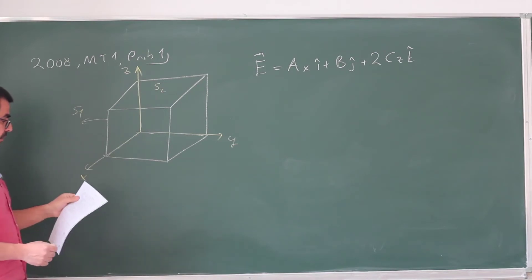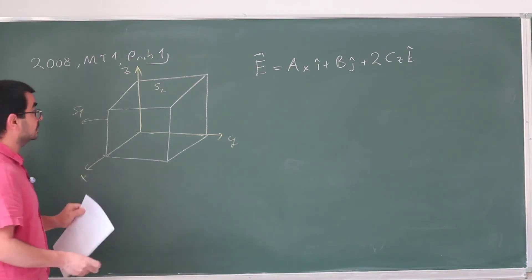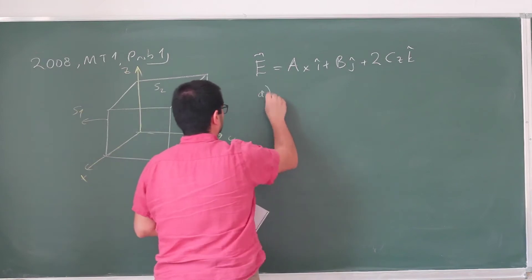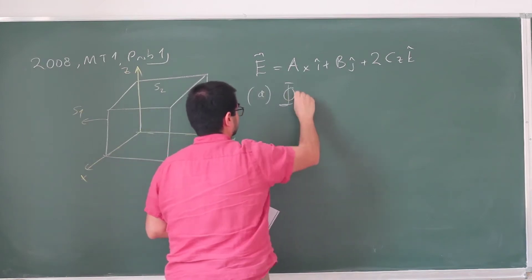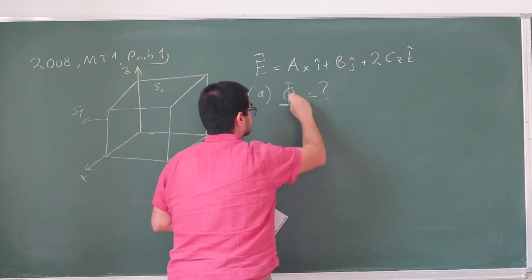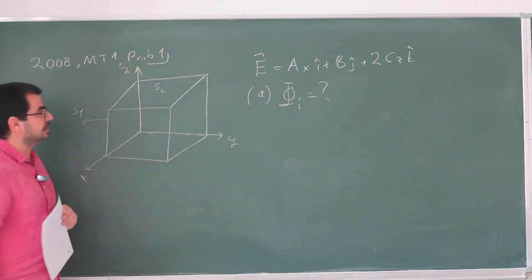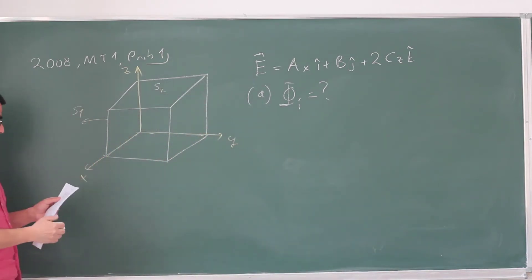Now for part A they're asking to find electric flux through each of the six cube faces. So what is this flux for each face? There are six faces of the cube.